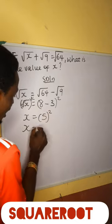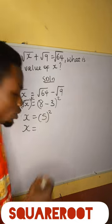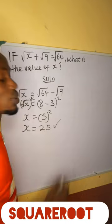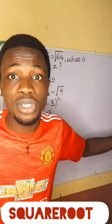So x is going to be 5 squared, which is 25. And that is the value of x. Any questions? See you on.